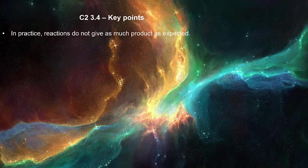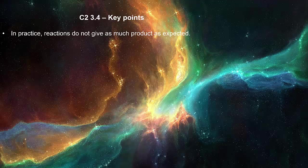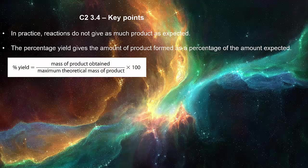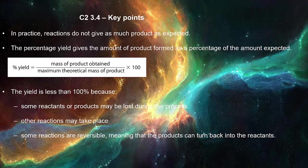In practice, reactions do not give as much product as expected. The percentage yield gives the amount of product formed as a percentage of the amount expected. Percentage yield equals mass of product obtained divided by maximum theoretical mass of product times 100. The yield is less than 100% because some reactants or products may be lost during the process, other reactions may take place, and some reactions are reversible meaning that the products can turn back into the reactants.